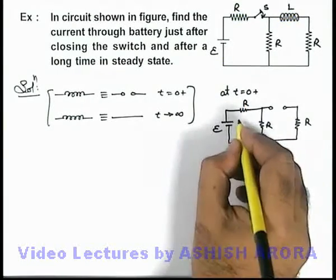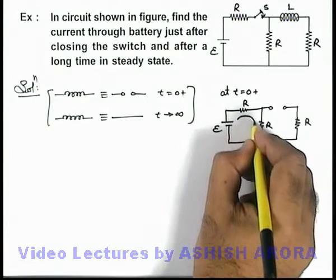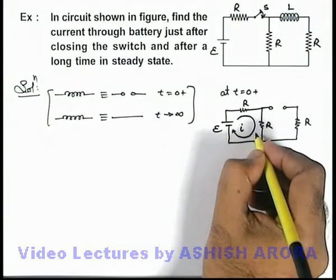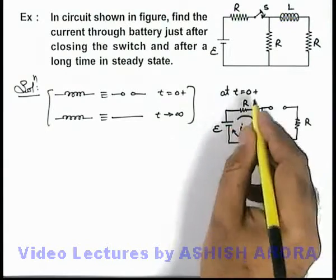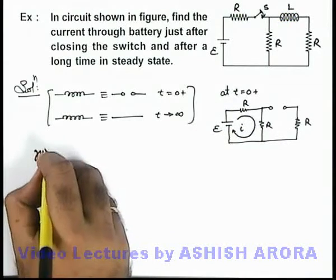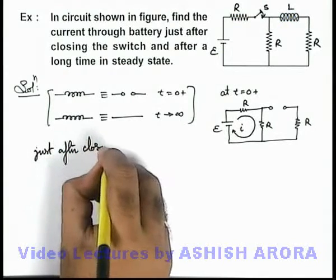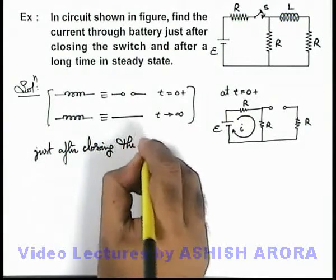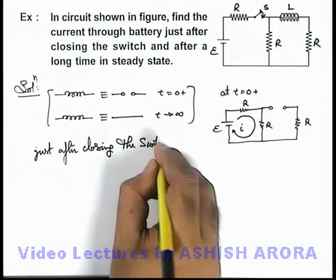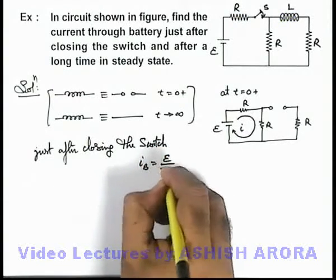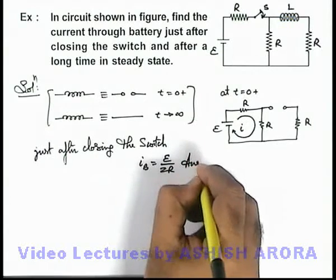So here we can see if the inductor is considered as open circuit the only current which will flow through battery will be through these 2 resistances in series. So we can write initially just after closing the switch, current through battery can be written as e by 2r, that will be the answer to this problem.